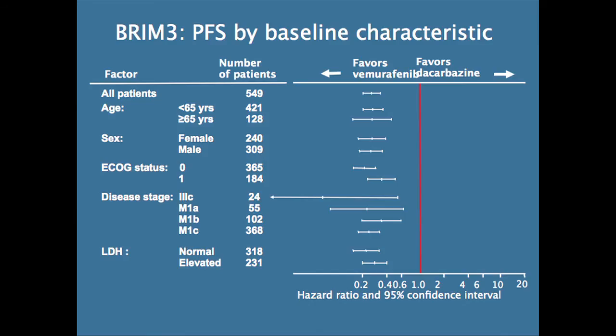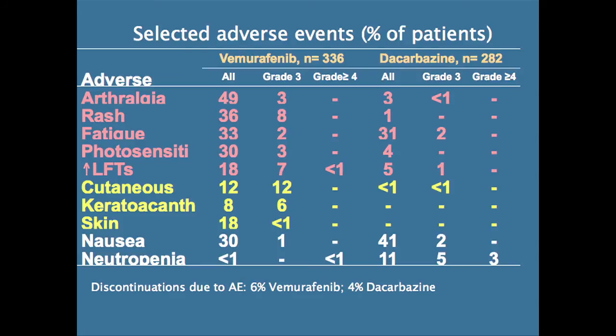All groups benefited — doesn't matter whether you're male or female, what your age was, the extent of your disease, your performance status, or the level of your biochemical parameters or LDH. The adverse effects for vemurafenib are very interesting. The things that most people get are some joint pain, rash, fatigue is very common, photosensitivity, and sometimes an increase in liver function tests. But something really interesting is that people can develop these very indolent, slow-growing skin cancers called keratoacanthomas and cutaneous squamous cell carcinomas — so you have to be aware of that.